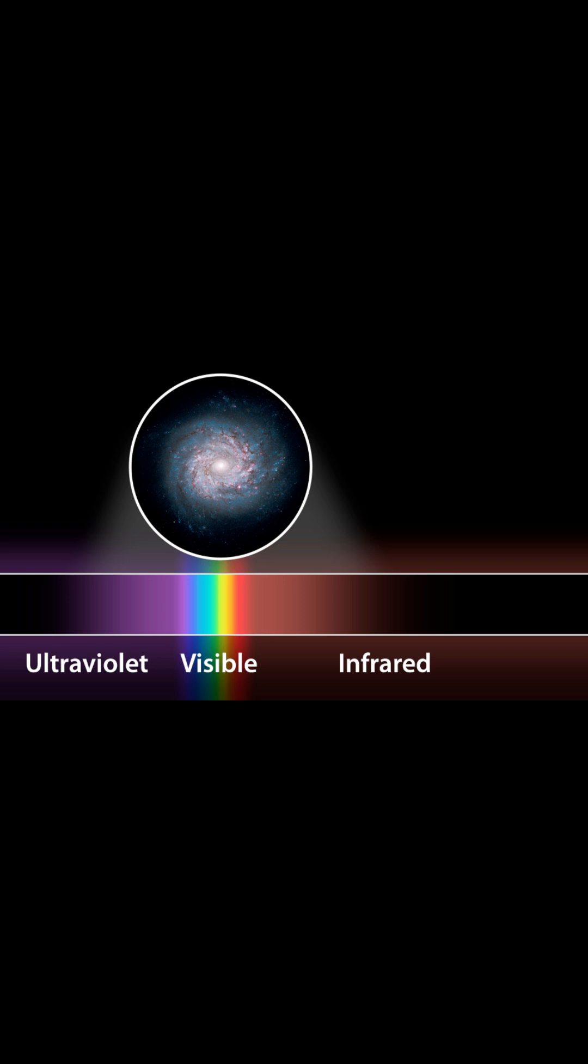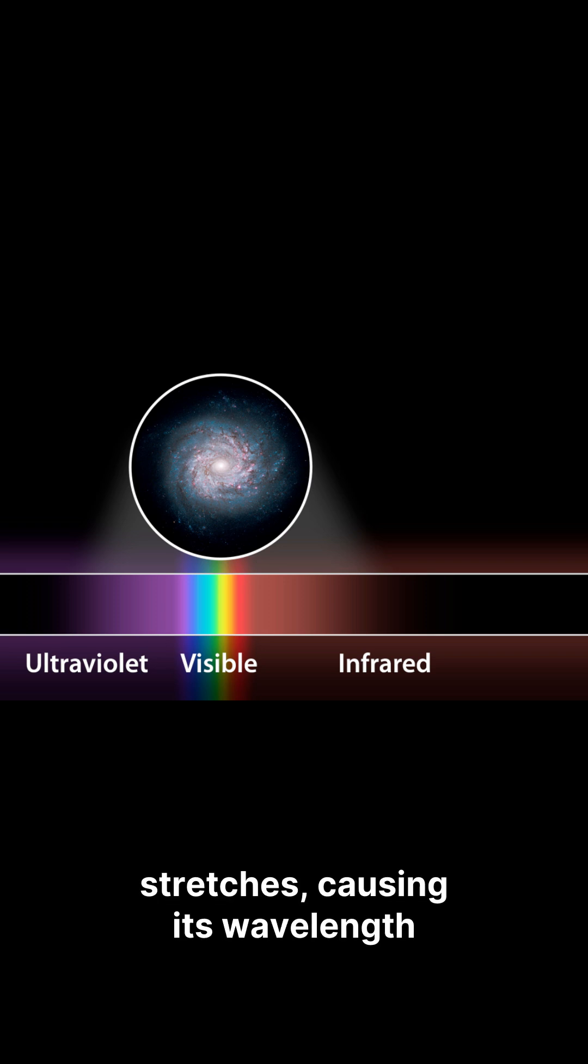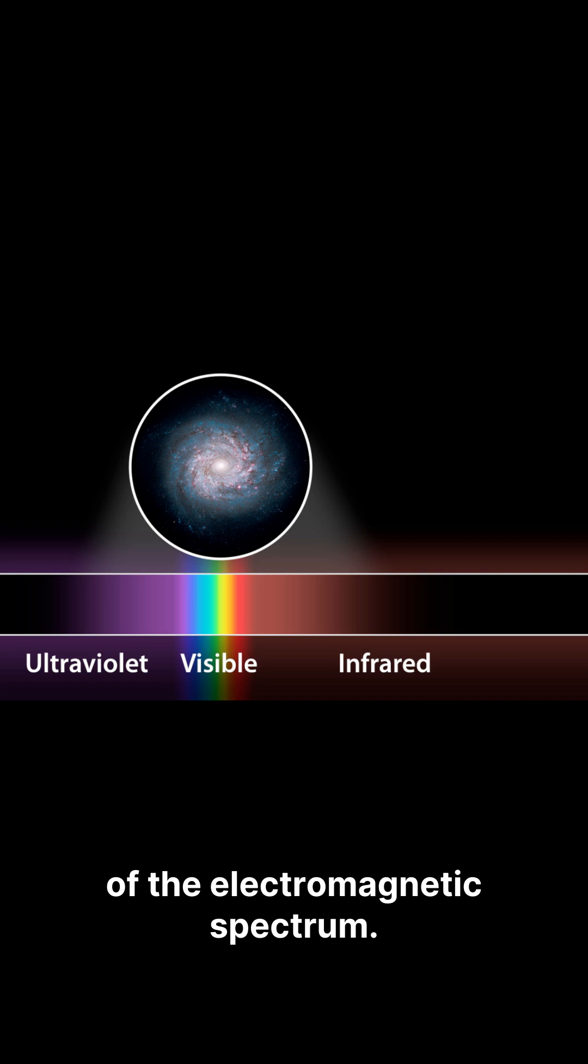Cosmic Redshift describes how light from distant galaxies stretches, causing its wavelength to increase and shift towards the red end of the electromagnetic spectrum.